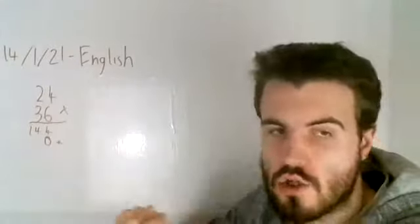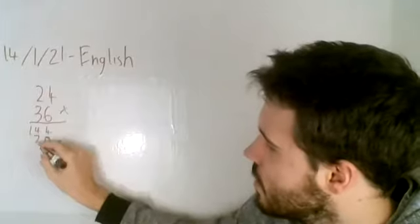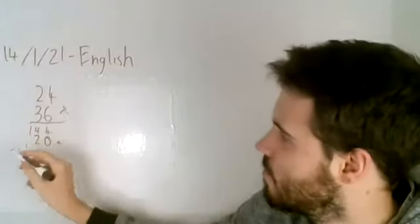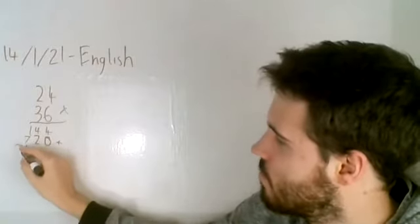Now I'll do three times four, which is twelve, so I'll put my two in, and I'll carry the one, and then I'm going to do three times the two above it, which is six, and I'll add that one in, which is seven.